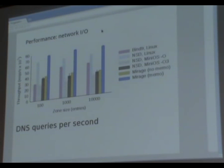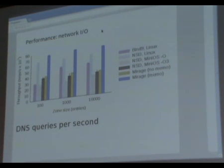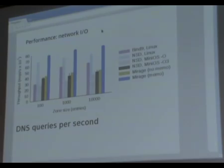BIND isn't meant to be super fast, but NSD is probably quite fast, and the Mirage one beats that too. Interestingly, we tried putting NSD into kernel space to make another comparison, but it's more sensitive to the environment - it perhaps needs a faster malloc than we happen to have, and performance dropped when we moved NSD into kernel space. In the OCaml case, moving the entire stack into kernel space performs exactly the same as it would in userspace.